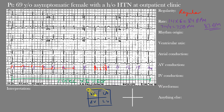Our sinus node is up in the right atrium near the superior vena cava. Internodal pathways come to our AV node, and there's also a Bachmann bundle that goes to the left side of the heart. From the AV node we have the His bundle, which splits into the right bundle branch innervating the right ventricle and the left bundle branch, which subdivides into the left anterior and left posterior fascicles. Both fascicles and the right bundle branch go to the ventricular Purkinje fibers that innervate the cardiomyocytes.